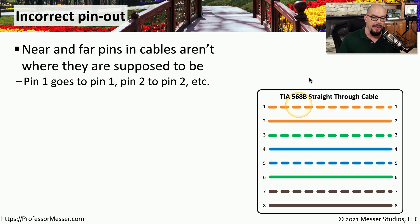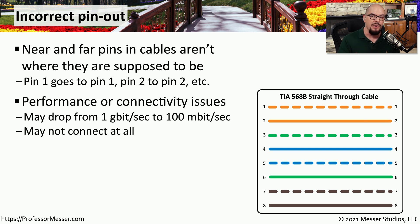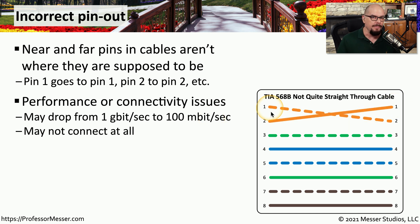If you look at the pinouts of a patch cable, you would commonly see it as a straight-through cable: pin 1 connects to pin 1 on the other side, pin 2 to pin 2, pin 3 to pin 3, and so on. If you do have problems with some of those pinouts, you may find performance problems or connectivity issues. Your gigabit connection may only connect at 100 megabits per second, or you may get no link light at all. Even a minor problem — connecting pin 1 to pin 2 and pin 2 to pin 1 — will result in no connectivity on your Ethernet connection.